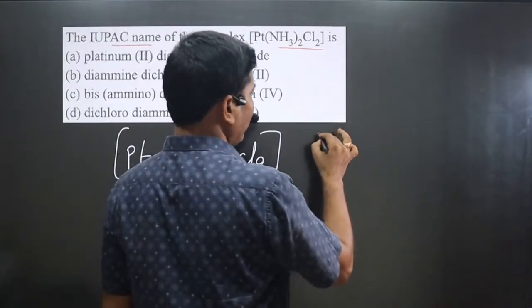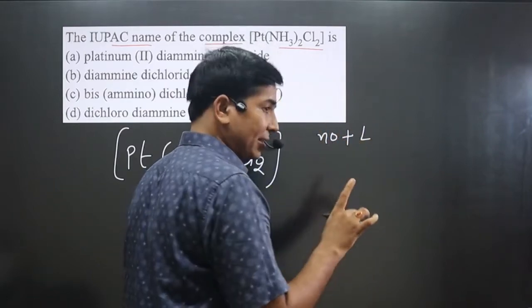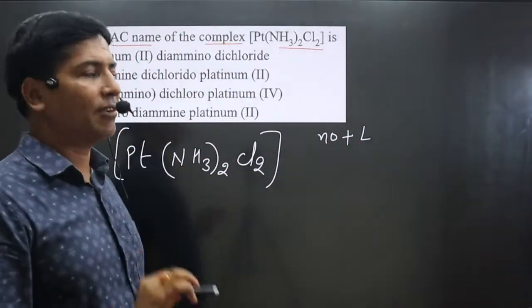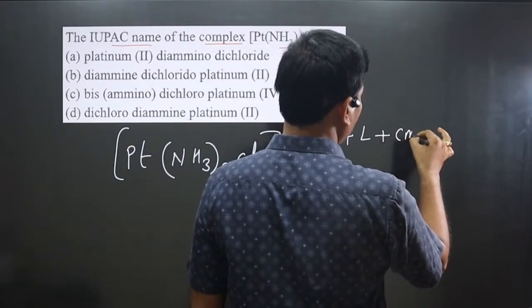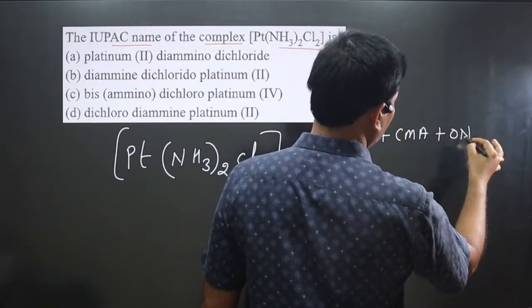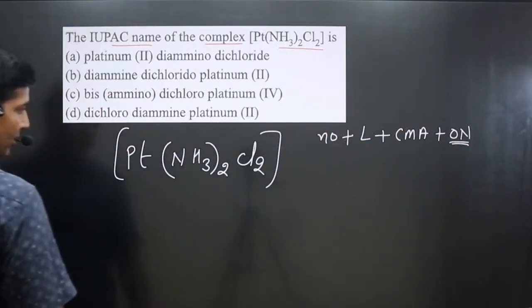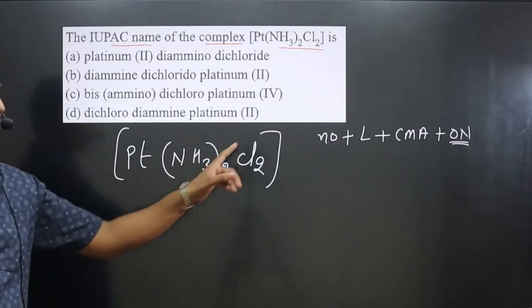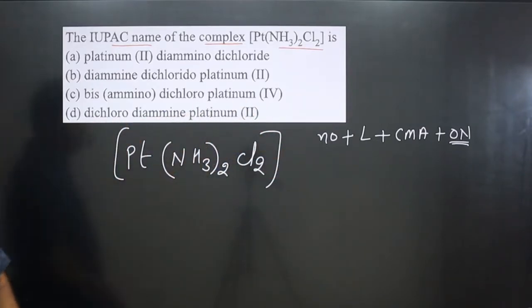To name a complex, we follow this order: first, the number of ligands; then the type of ligands — if more than one type is present, we follow alphabetical order; then the central metal atom; and finally the oxidation number of the central metal atom in Roman numerals.